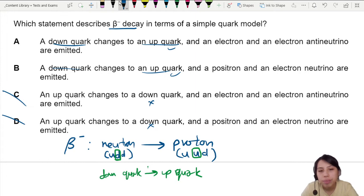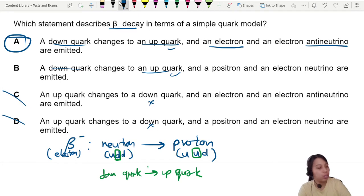And what comes out? Well, this thing is what we call an electron. Beta minus is a fancy name for electron. So an electron comes out and an antineutrino comes out also. So the best choice is A. This is for beta minus.